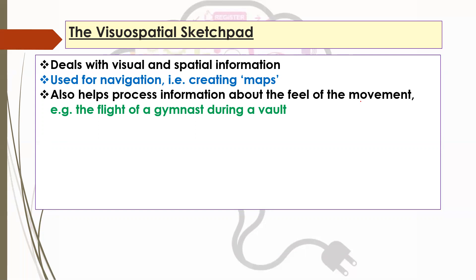Can you think of any other examples? Think of anything where there's a significant amount of movement involved, particularly where sequences are involved — like anything to do with trampolining — where it's important that you have an understanding and a sense of where your body is in relation to objects, or in that case, the trampoline. That information is dealt with in the visuospatial sketchpad.